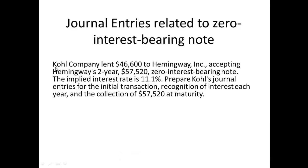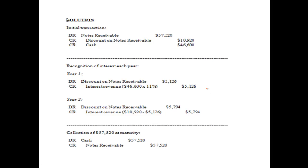In the given question, we are given that the company lent $46,600 to another company accepting a two-year $57,520 interest bearing note. The implied interest rate is given as 11.1%, and we need to prepare the general entries for the initial transaction, recognition of interest each year, and the collection of $57,520 at maturity.